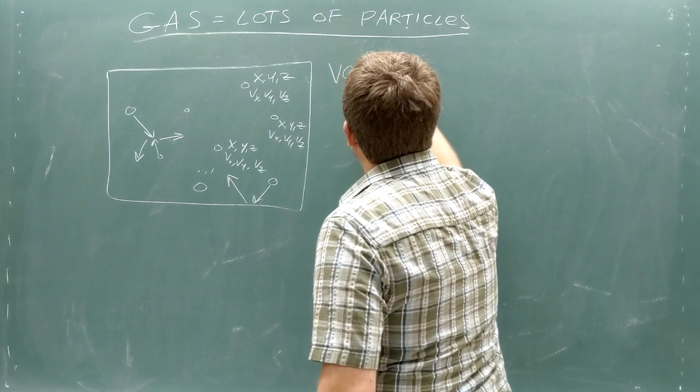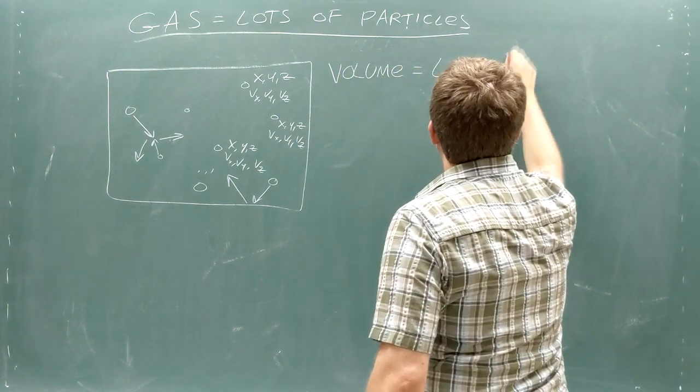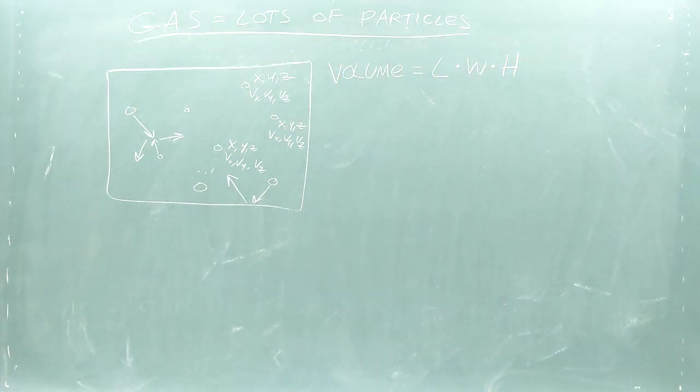First is the volume of the gas. If the gas is contained in a box like we'll be studying today, this volume is just the volume of the box since the particles in a gas will always spread out around the box. We can change the volume of this box by using a piston or the volume can change naturally if the walls of the box expand or contract under changing temperature.